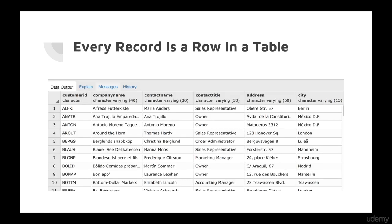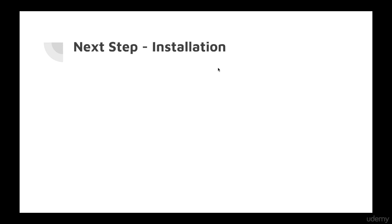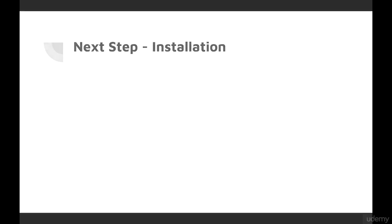Every record comes back as a row in a table. You can see here I ran a query and it pulled back multiple records, each of which has information in each field. That's the basic structure of data and databases. Next, we're going to get into installation and show you how to get the software up and running on your system.